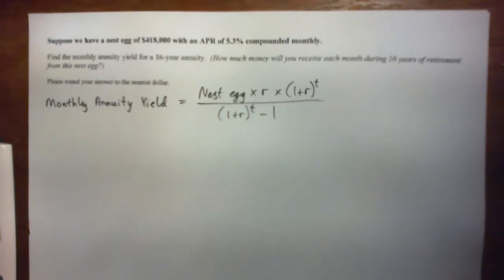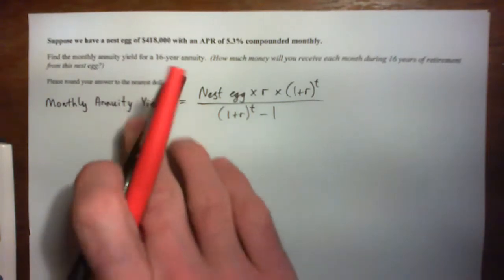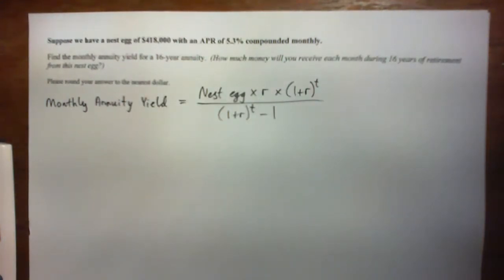Hi everyone. Let me help guide you through this question here. We've got a nest egg of $418,000 with an APR of 5.3% compounded monthly. Find the monthly annuity yield for a 16-year annuity. How much money will you receive each month during 16 years of retirement from this nest egg?